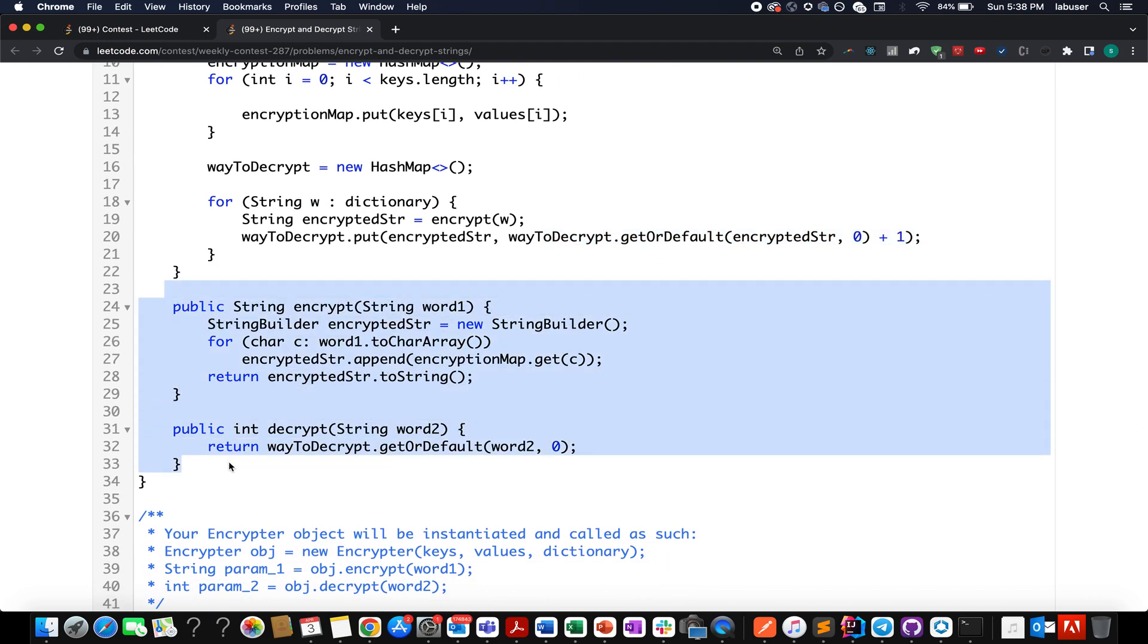Now the problem reduces to writing the encrypt and decrypt helper methods. It's really simple. I walk through each character of my word1 and I have created a new encrypted string variable. Here I append and get what is the corresponding string for this particular character from my encrypted map. In the end, I simply return encrypted string to string format and return it as the answer. For the decryption part, it's again really simple. I check what is the frequency that is present for this decrypt string word2 in my ways to decrypt map.